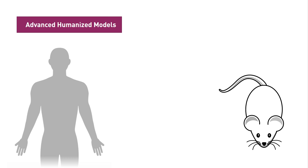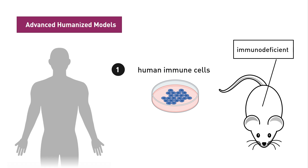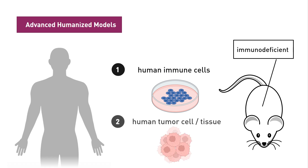An advanced humanized mouse model contains both a human tumor and a human immune system. With these models, scientists first engraft human immune cells into an immunodeficient mouse and then engraft the human tumor cells or tissues.